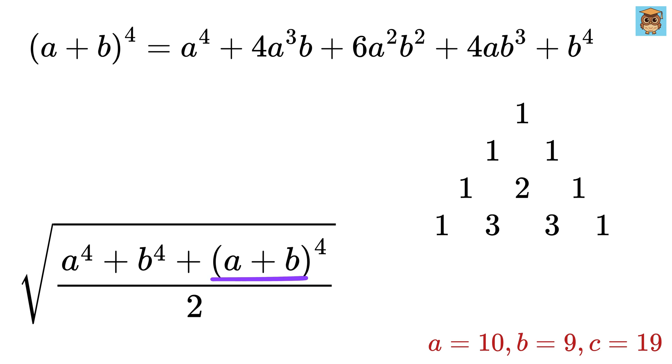The fourth row is 1, 3, 3, 1, formed similarly by adding numbers from the row above. The fifth row, which we need for the power of 4, is 1, 4, 6, 4, 1, which gives us the coefficients in our required expansion.